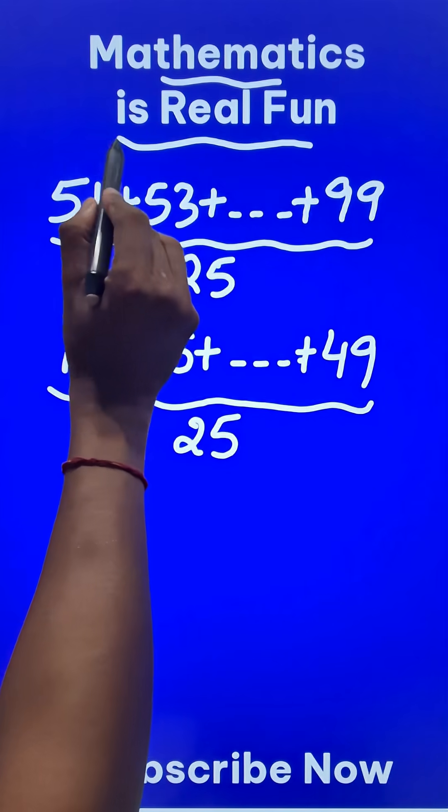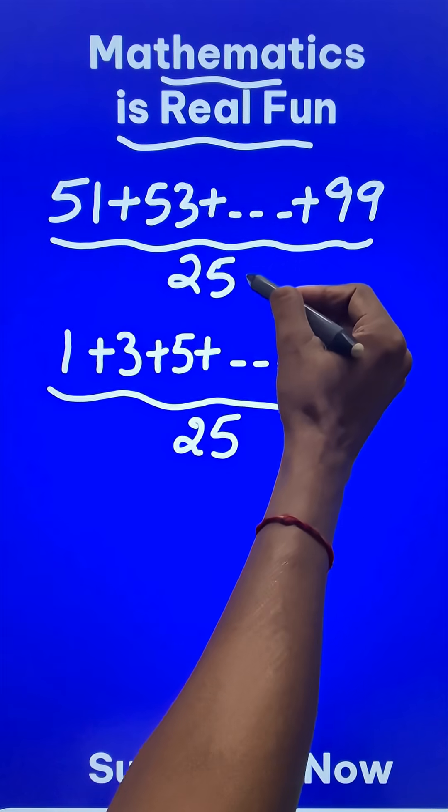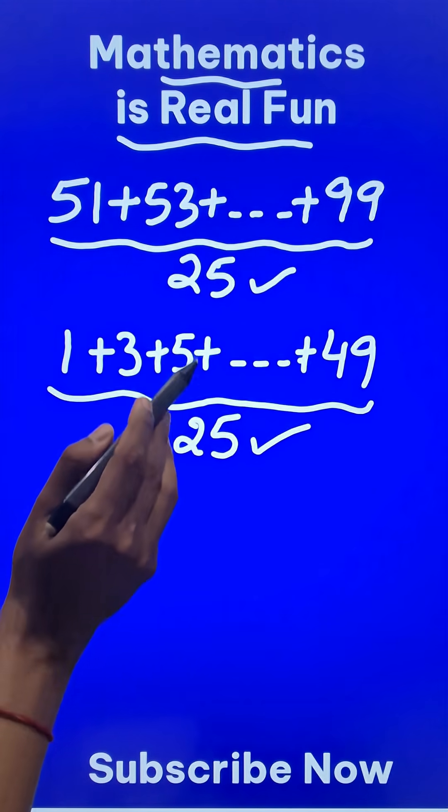Now all you need to do to find the sum of 51, 53 up to 99 is just add these two: 25 plus 25 is 50.